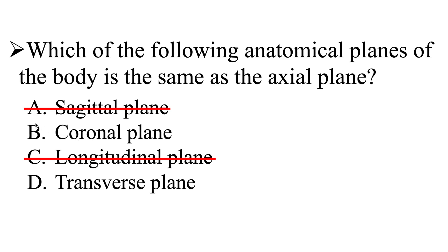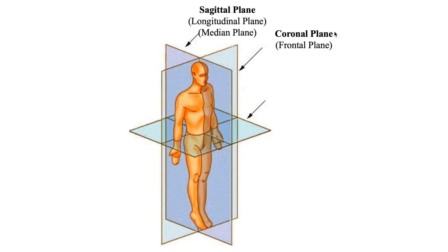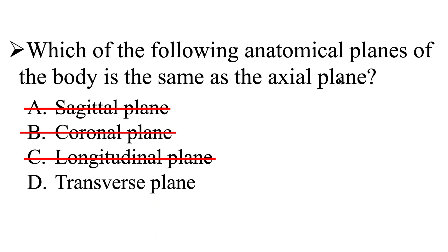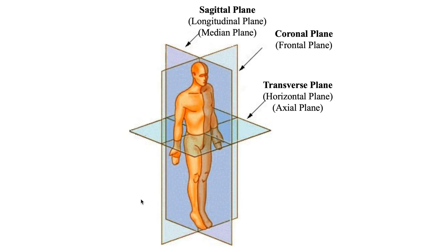That leaves us with either B, the coronal plane, or D, the transverse plane. The coronal plane is also known as the frontal plane. It is going to divide the body into anterior and posterior halves, meaning the front and the back. So the coronal plane is not the correct answer, leaving us with the transverse plane.